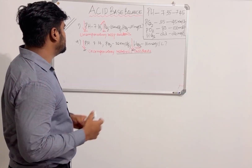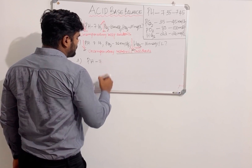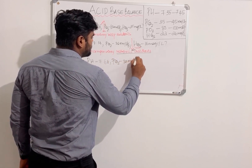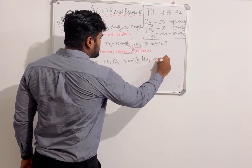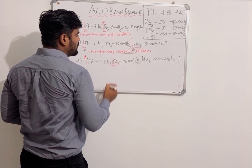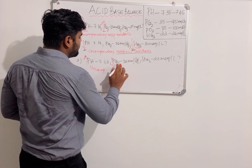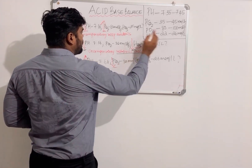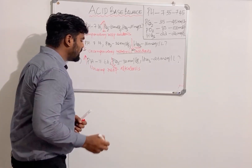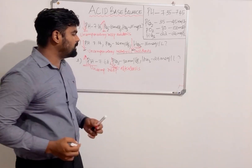Third question: pH 7.68, pCO2 30 mmHg, bicarbonate 26 mEq/L. Here pH is high, pCO2 is low, and bicarbonate is normal. Since pH is abnormal, it is uncompensatory. Since pCO2 is abnormal, it is a respiratory problem. Since pH is increased, it is alkalosis. pH and pCO2 show an opposite relationship, confirming it is respiratory. Answer: uncompensatory respiratory alkalosis.